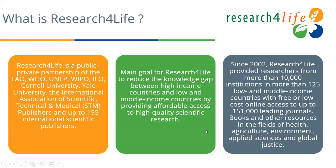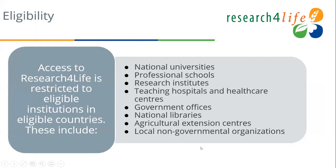Research for Life is a public-private partnership of five UN agencies — FAO, WHO, UNEP, WIPO, ILO — and up to 155 international publishers. Since 2002, Research for Life has provided researchers from low- and middle-income countries with free or low-cost online access to a collection of up to 151,000 leading journals in the fields of agriculture, environment, applied science, global justice, and health. Country eligibility is assessed annually based on factors that determine whether a country qualifies for Group A free access or Group B fee-based access.